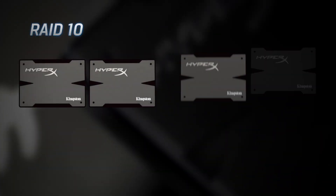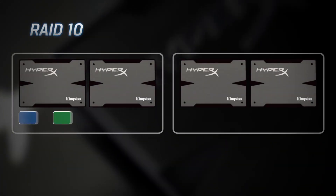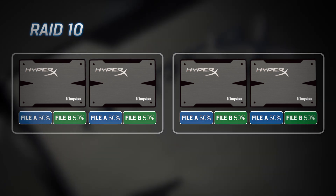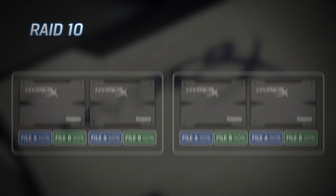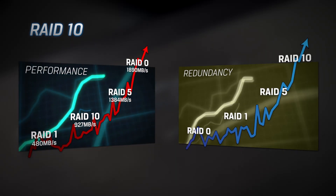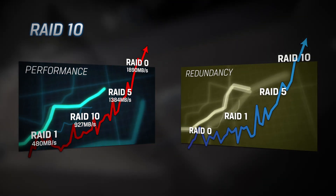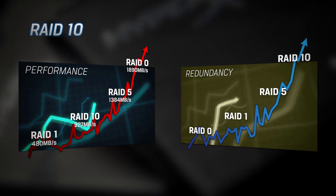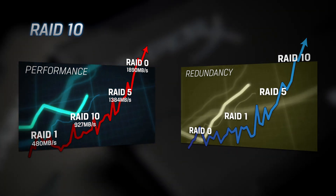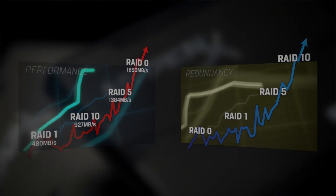RAID 10 is a combination of RAID 0 and 1. RAID 10 offers fast write performance and redundancy. However, you sacrifice half the capacity of the drives you have built into your RAID 10 array. This can be more expensive to implement for larger data sets.